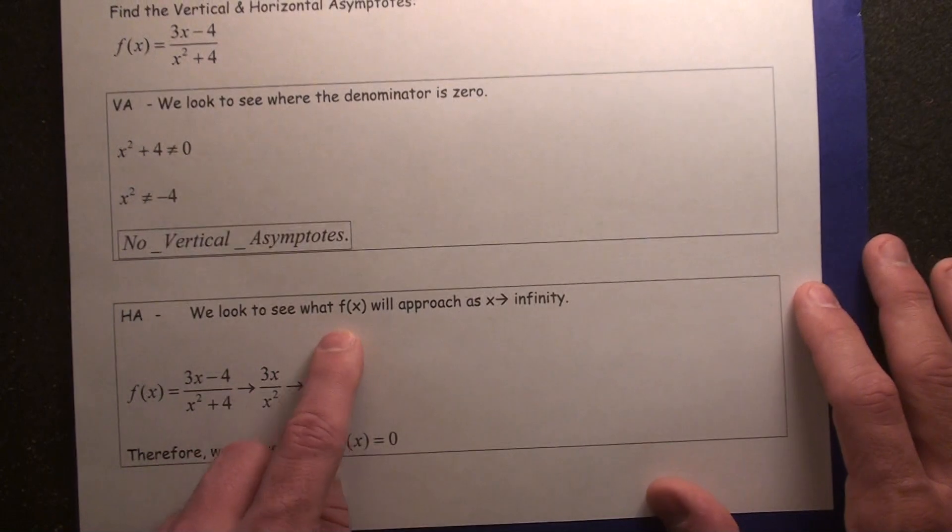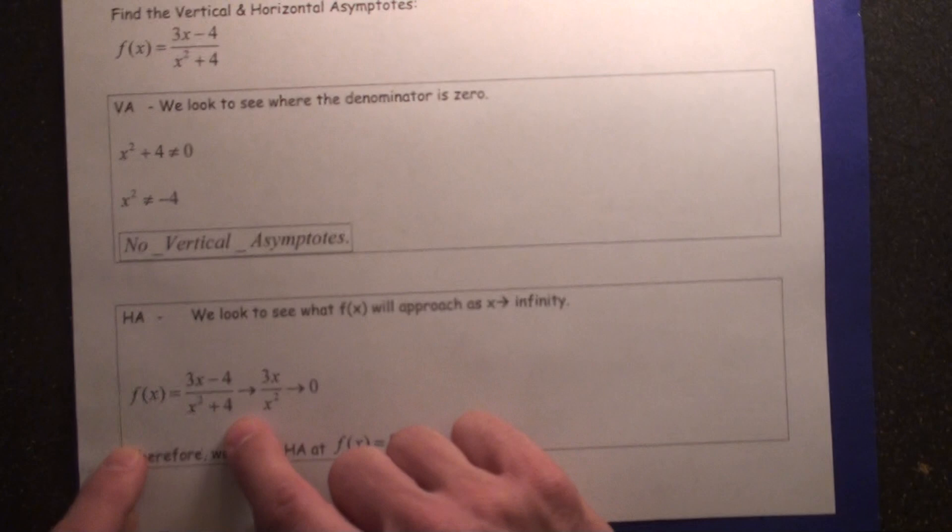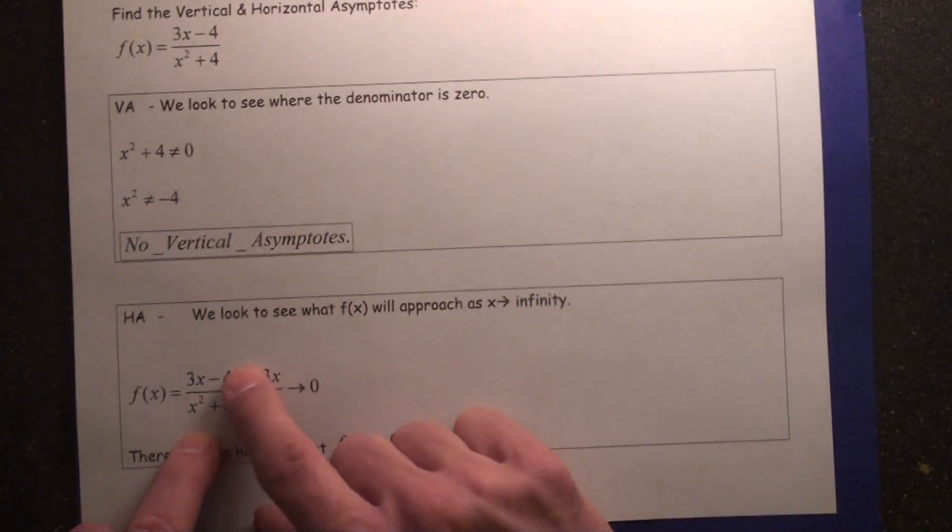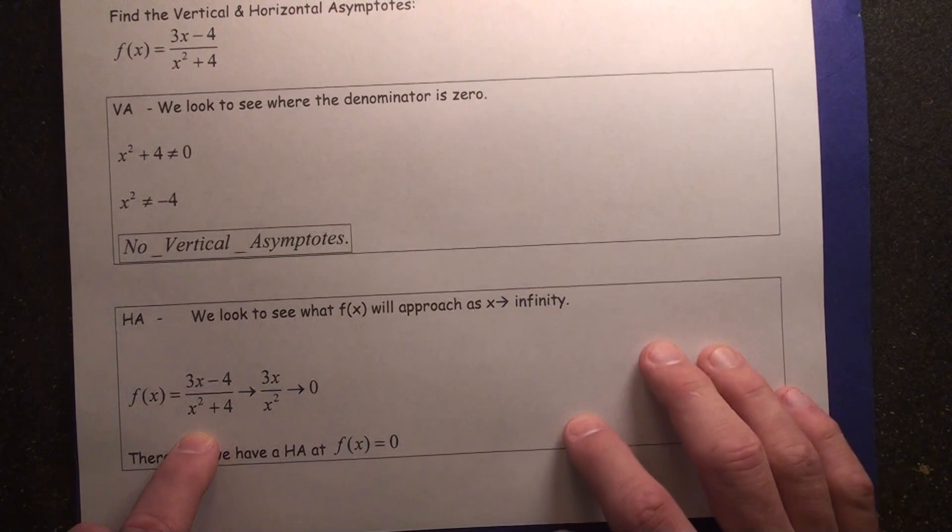And then horizontal, we look to see what f of x will approach as x gets larger. Here, this minus 4 and plus 4 become insignificant, so we don't even worry about that. So actually, 3x minus 4 over x squared plus 4 approaches 3x over x squared.